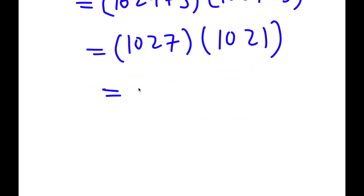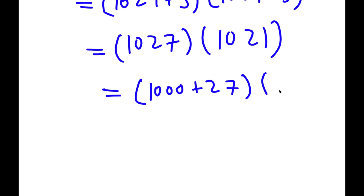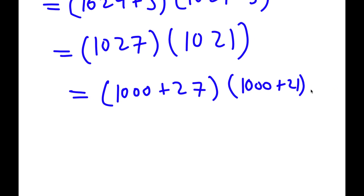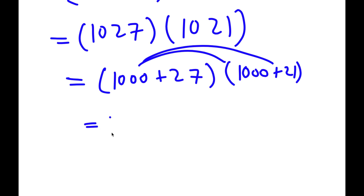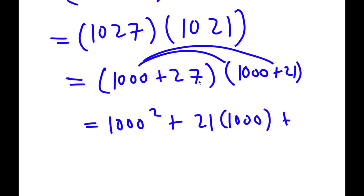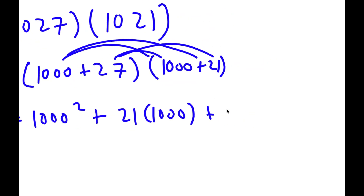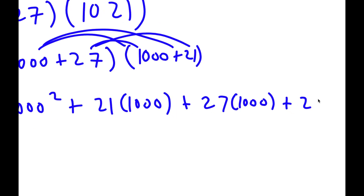I can rewrite 1,027 as 1,000 plus 27, and 1,021 as 1,000 plus 21. So now I have 1,000 plus 27 times 1,000 plus 21. Distributing: 1,000 times 1,000 is 1,000 squared, plus 1,000 times 21, plus 27 times 1,000, plus 27 times 21.